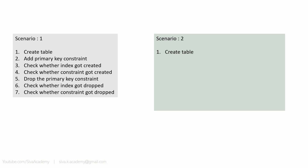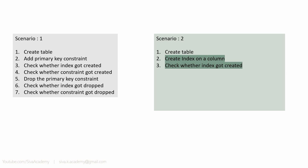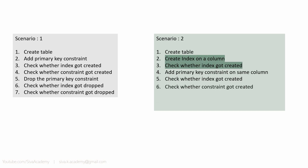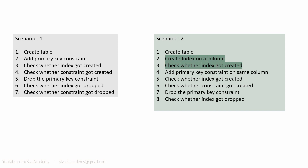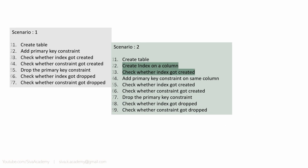Scenario two is very similar to scenario one with one small change. Here we are going to create a table, then create an index for a column, and check whether the index is created properly in the underlying data dictionary table. After that, we are going to create a primary key on that same column, check whether an additional index got created, check whether the constraint got created in the metadata tables, drop the primary key, and then check whether the index gets dropped and whether the constraint got dropped.